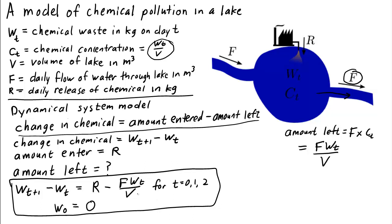We can immediately see from this model that the actual values of the flow rate f and the volume v don't matter in and of themselves. All that matters is the ratio f over v, because that's the only way that f and v show up in our dynamical system model. So even if we don't know what f is and don't know what v is, as long as we know what f over v is, we can determine the evolution of the chemical waste.